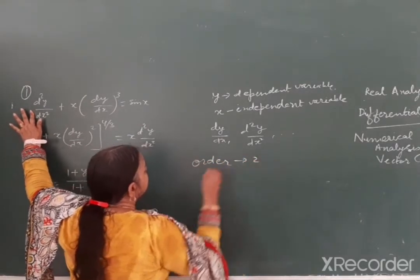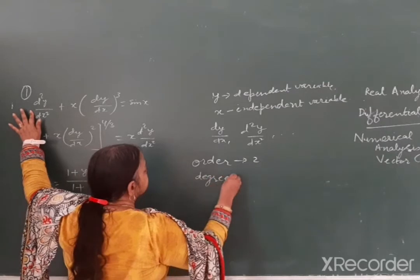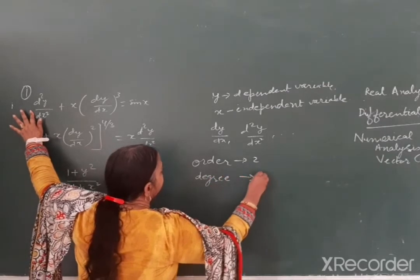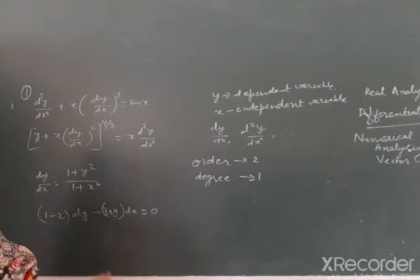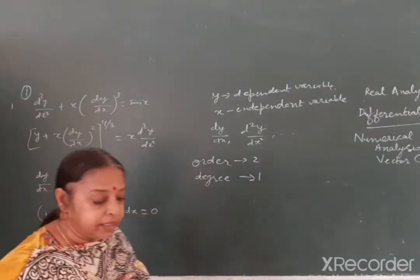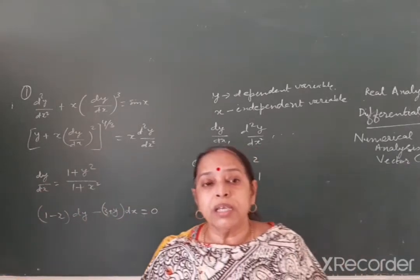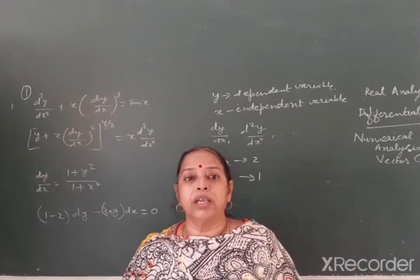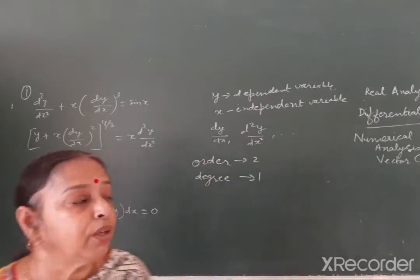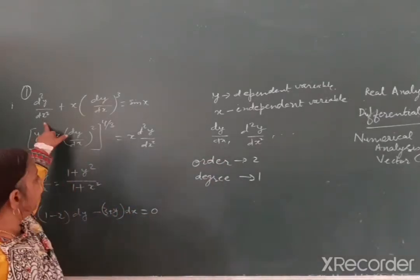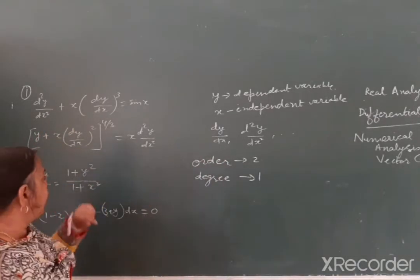Aur degree iski ho jaayegi 1, kyunki sabse bade order ke jo aapka derivative hai, uski jo ghaat hoti hai, wo iski degree kehlaati hai. Toh yahan iske upar power kitni hai? 1. Iske degree ho jaayegi 1.